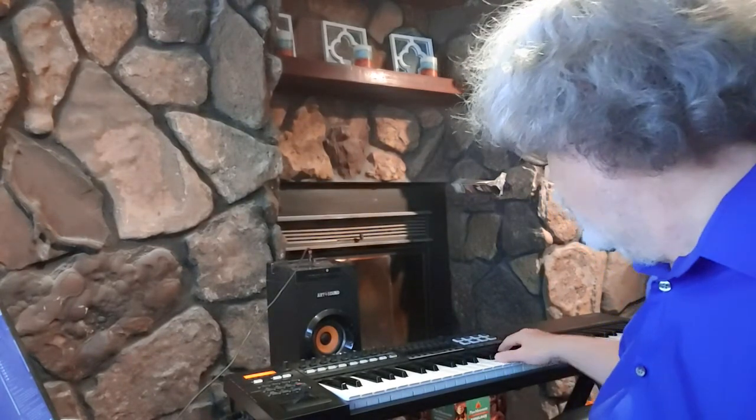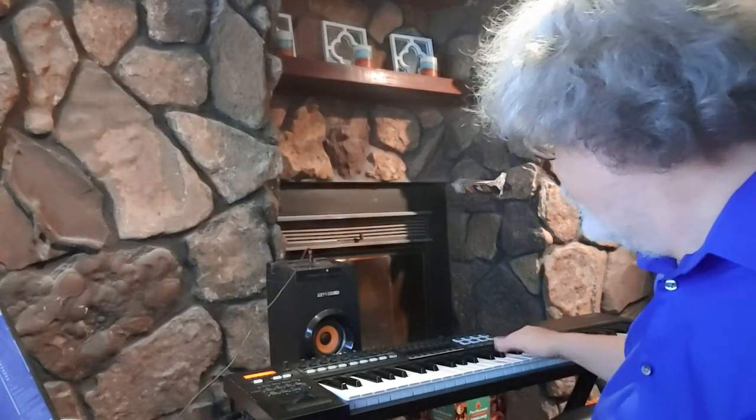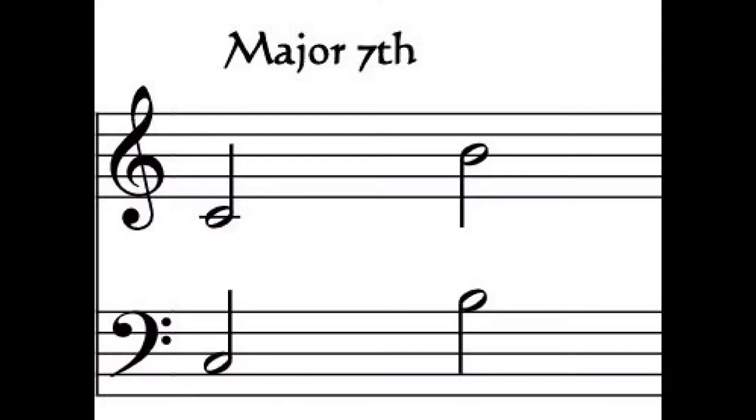Finally, we reach the interval of the major seventh. If we're starting on C, then the major seventh above that is B natural. It almost sounds like an octave, but not quite — it wants to pull up to the octave but doesn't. It's the largest interval that doesn't go more than one octave; it's the largest simple interval. Beyond this, they get into compound intervals.